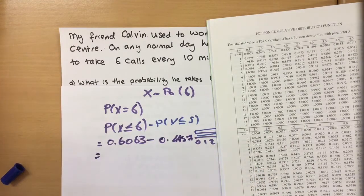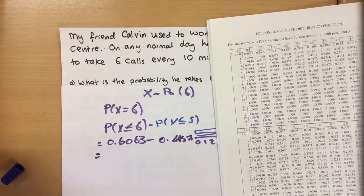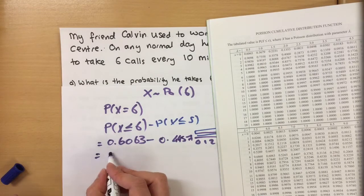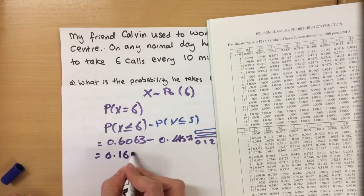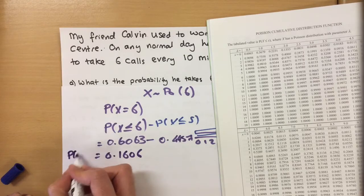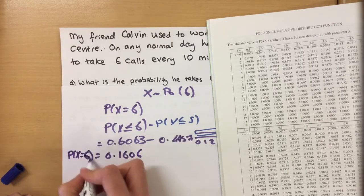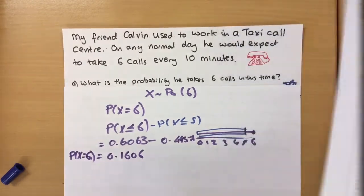I'm going to take away everything less than that which is 0.4457. So the probability of getting exactly six calls is quickly going to be 0.1606 as an answer. Probability X equals six is there we go, beautiful.